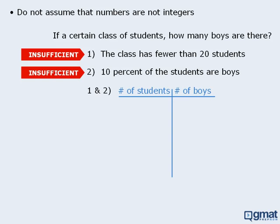Let's see why. Since there are fewer than 20 students, it is possible that there are 19 students altogether. Since 10% of the students are boys, this would mean that the number of boys equals 10% of 19, which is 1.9. Of course, we can't have 1.9 boys. Perhaps there are 18 students in total — that would mean 1.8 boys, which still cannot be the answer. Since this is a real-world question, the number of boys must be a positive integer. If we continue to test various values, we find that when there are 10 students, the total number of boys is 1. For all other possible values, the number of boys will be non-integers. So the total number of students must be 10, and the number of boys must be 1.